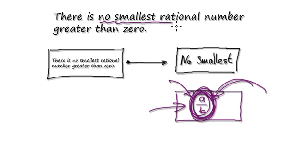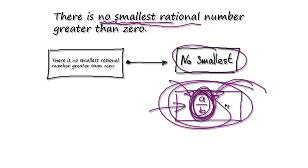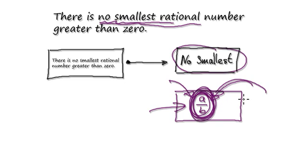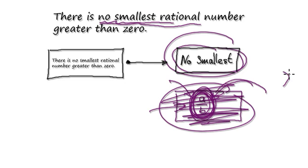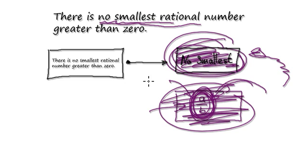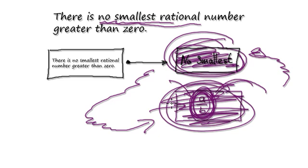So currently up here we're saying no smallest rational number. Down here we're saying there exists the smallest rational number. So currently as things stand, either this is true or this is true. It can't be both. If this is not true, then this has no choice but to be true. If this is false, then this has no choice but to be true.